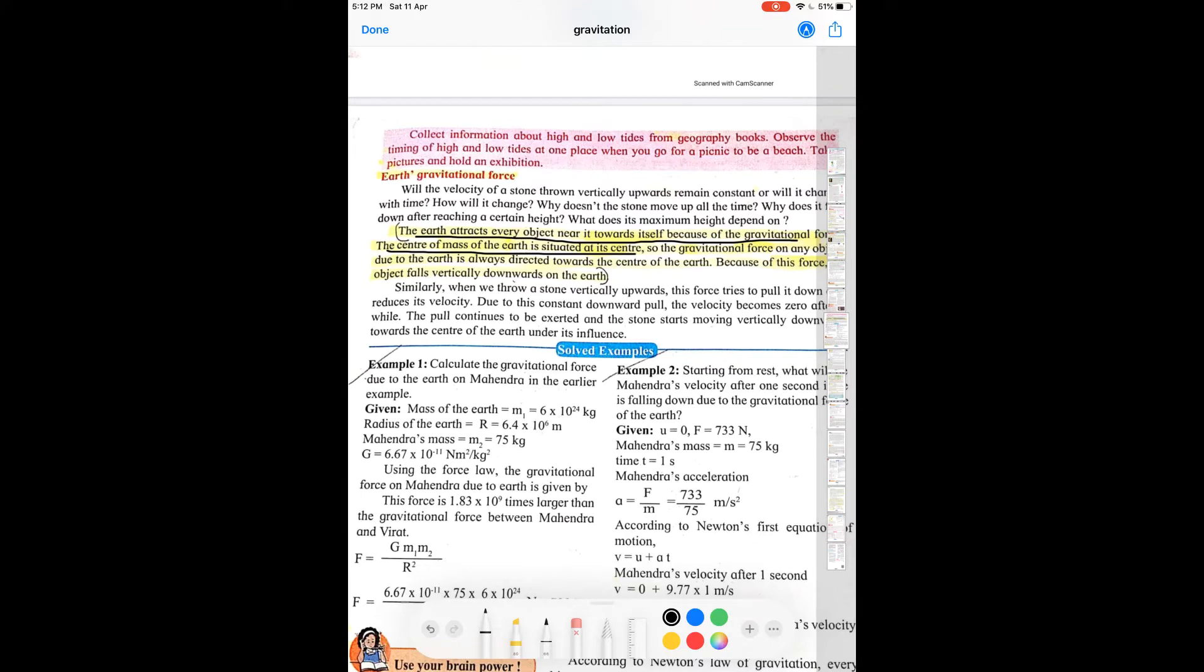The gravitational force acting on any object due to the Earth is always directed towards the center of the Earth. So whenever you throw any object into the sky in the upward direction and it falls down, that object is directed towards the center of the Earth. That is why the object falls down because of the gravitational force.